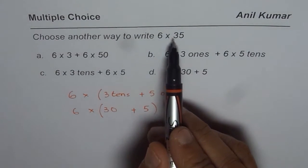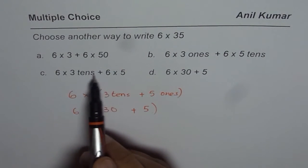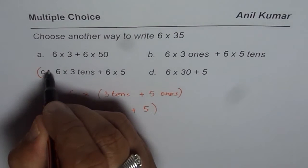You are multiplying 6 by 30 and 5, so 6 × 30 and 6 × 5, then add them up. Correct? So that is the right answer.